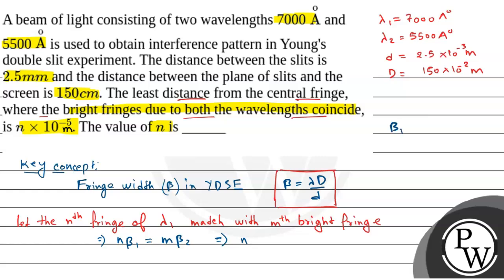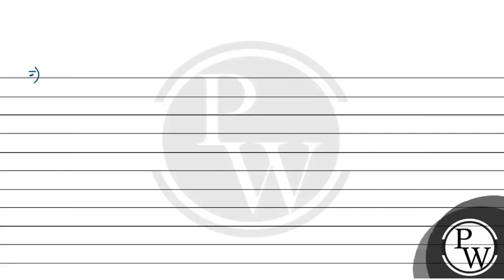Substituting the fringe width formulas: β1 = λ1·D/d and β2 = λ2·D/d. So the equation becomes n × λ1·D/d = m × λ2·D/d. Capital D and small d cancel out, giving us n/m = λ2/λ1.